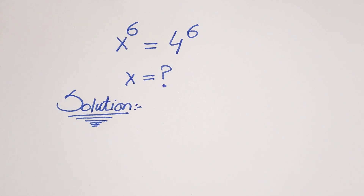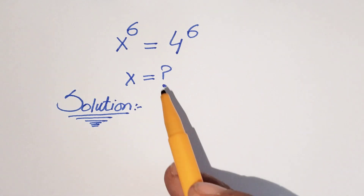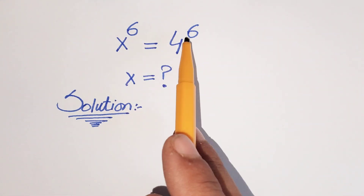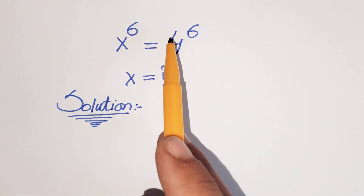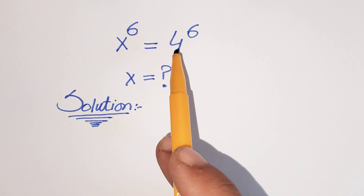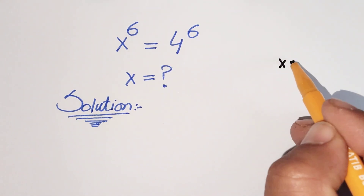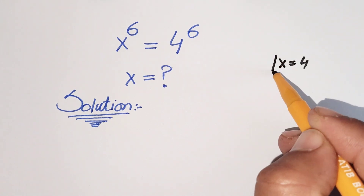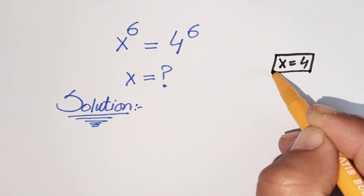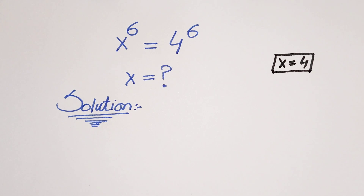Now here, if we see our question, the exponent on both sides of this equation is the same. So by using the exponential property we can write x is equal to 4. But x equals 4 is correct but not the complete solution — we have to find all the possible solutions of x.